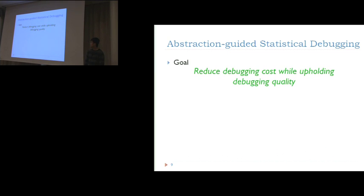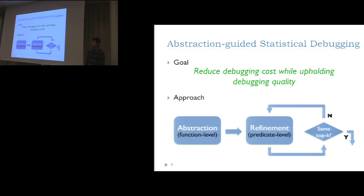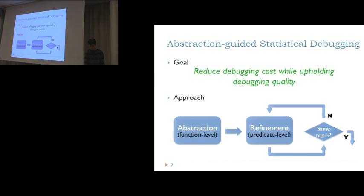Our goal is to reduce debugging cost while upholding debugging quality. Our approach is inspired by the abstraction refinement technique and has two phases. In the abstraction phase, we only instrument function entries to collect suspiciousness information at the function level. We then use this to guide refinement at the predicate level. The insight is that function-level execution information can be used as an approximation to guide refinement. We iterate this process until we get the same result as the full instrumentation approach.